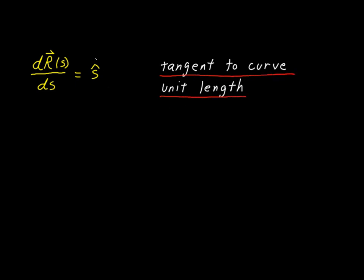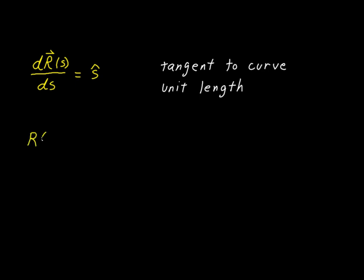So now we know that the derivative of a vector with respect to the arc length is, first of all, tangent to the curve, and secondly, it is of unit length. We represent it with a hat symbol, which is what we use to represent a unit vector. But what happens if our vector is not a function of the arc length, but is a function of something else, such as another parameter like t?